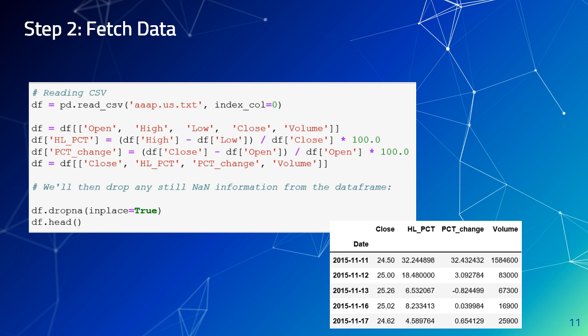In step 2, we fetch the data. In the first code block, you can see how we use the Pandas library to read the CSV file and generate a new data frame. Based on our formulas, we generate the HLPCT and the PCT change columns. HLPCT means the high-low percentage, and PCT change means the percentage change. The resulting new data frame is shown in the second graph below. At the end of this step, we also drop any empty information from the data frame.